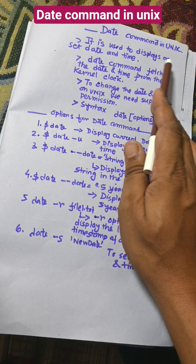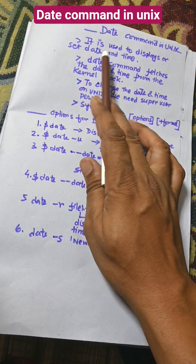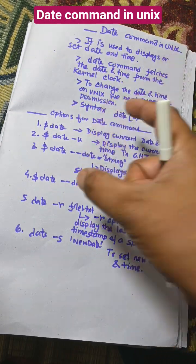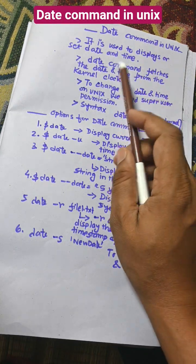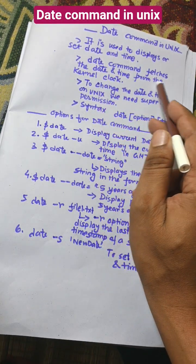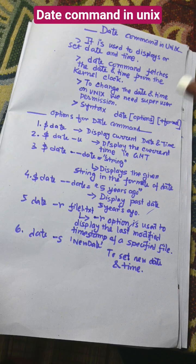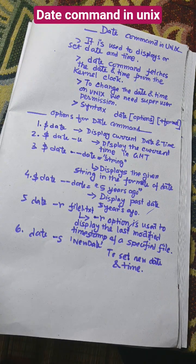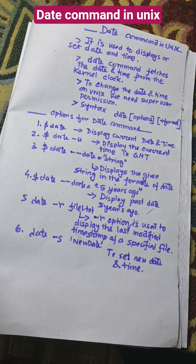The date command is used to display or set date and time. Date command fetches the date and time from the kernel clock.